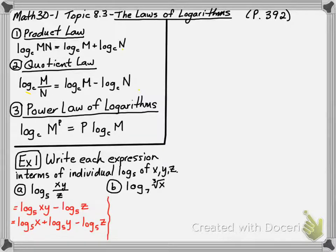In B, we have log base 7 of the cubed root of x, which we can rewrite as log base 7 of x to the power of 1 third. Then we can bring down the 1 third in front to say it's equal to 1 third times the log base 7 of x. And that's it.